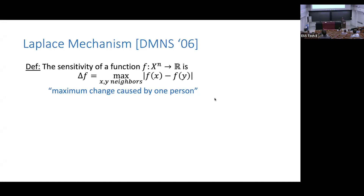We'll first tell you about some of the original tools, and then how we build complicated algorithms for the type of machine learning that we like to do. Our first tool is called the Laplace mechanism, which effectively adds noise to hide one person's data. The question is: how much noise do I have to add to hide one person's data?